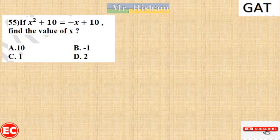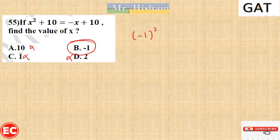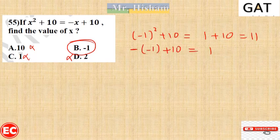Question 55: x² plus 10 equals negative x plus 10. It's clear that 0 satisfies this, but for any positive value it will not. The answer is negative 1, because: (−1)² + 10 = 1 + 10 = 11, and −(−1) + 10 = 1 + 10 = 11. Both sides equal 11, so the right answer is negative 1.